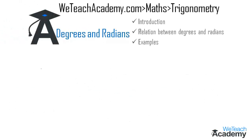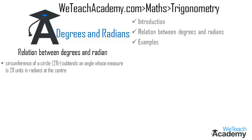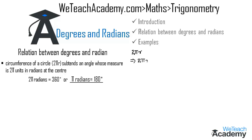Now let us discuss the relationship between degrees and radians. The circumference of a circle is given by the formula 2πr, which subtends an angle of 2π units in radians at the center. Thus 2π radians = 360 degrees, or π radians = 180 degrees. The circumference 2πr subtends an angle of 360 degrees, so we can write 2π radians = 360 degrees, and π radians = 180 degrees.